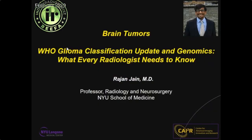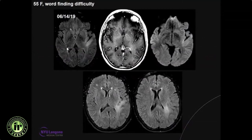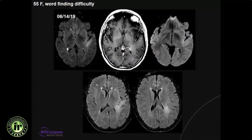The topic of my talk is WHO Glioma Classification Update and Genomics: What Every Radiologist Needs to Know. I'm going to start with showing a case — a 55-year-old female presenting with word-finding difficulty. The initial MRI shows a non-enhancing infiltrative signal abnormality involving the left temporal lobe as well as the left insula.